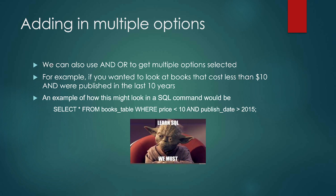We can also add in multiple options — extras. We can say things like books that cost less than $10 and were published in the last 10 years. So we can say, I want to see everything from the books table where the price is less than $10 and the publication date is greater than 2015. We can really narrow in on the type of data we're seeing, so instead of 10,000 records coming back, maybe only 3,000 records come back.